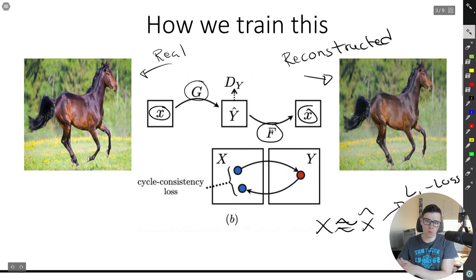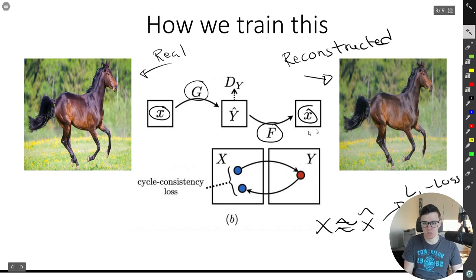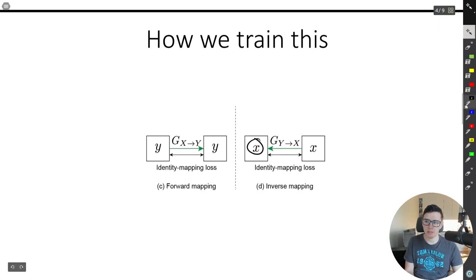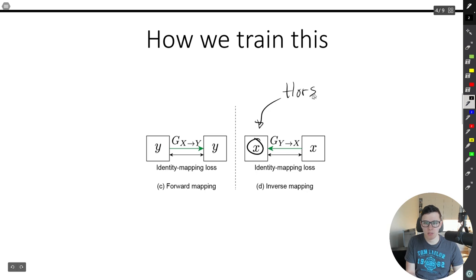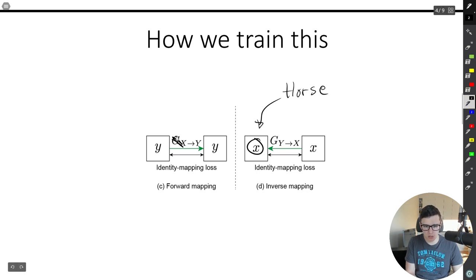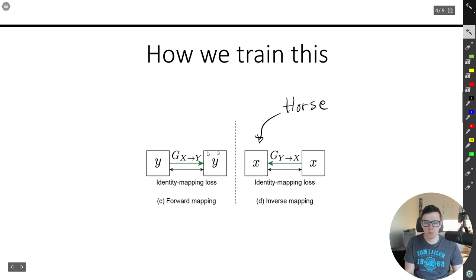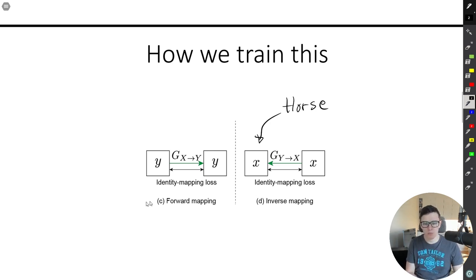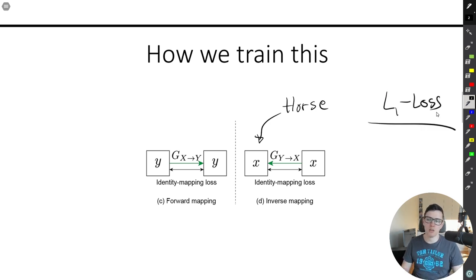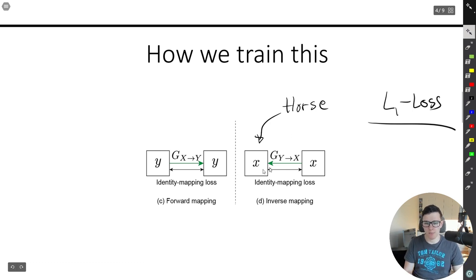We train these two generators and two discriminators, but we also add cycle consistency. I only showed it for the horse, but we're going to do the same thing for zebras. They also add an identity mapping loss. If we take an image of a horse and send it into the generator that is supposed to generate a horse, it shouldn't do anything. Similarly, if we send a zebra to the generator that generates zebras, it shouldn't touch the image. We enforce this with an L1 loss. The reason is that we don't want the generators to change the coloring or tint of the image too much — this is a way of preserving coloring.